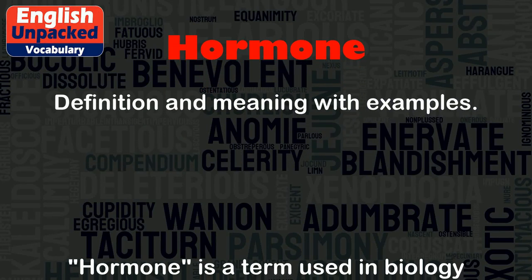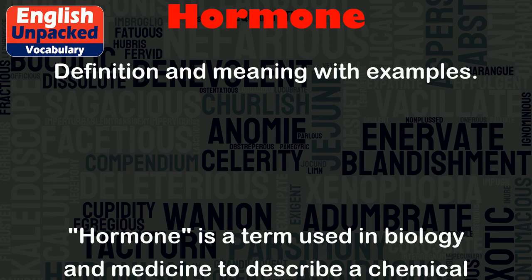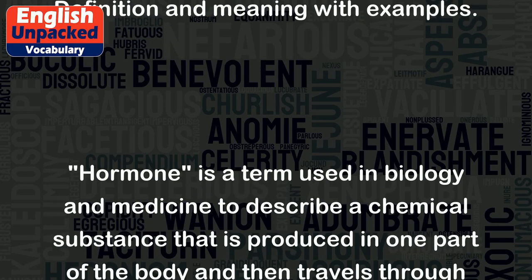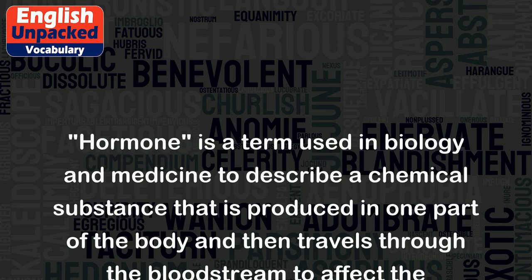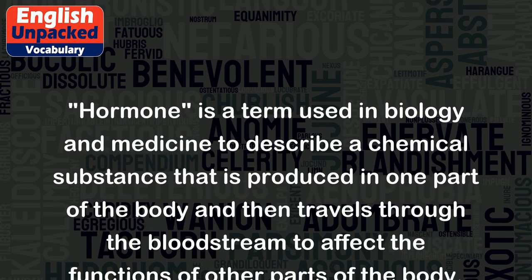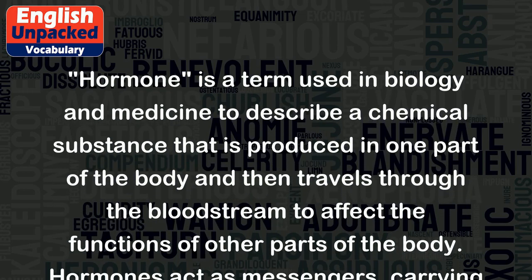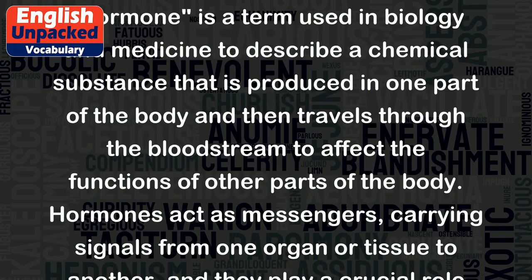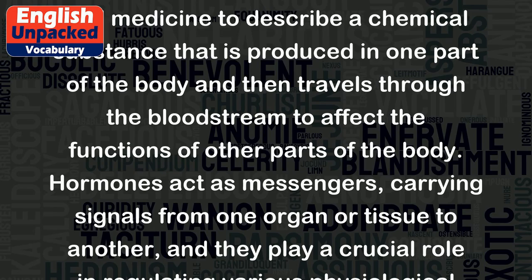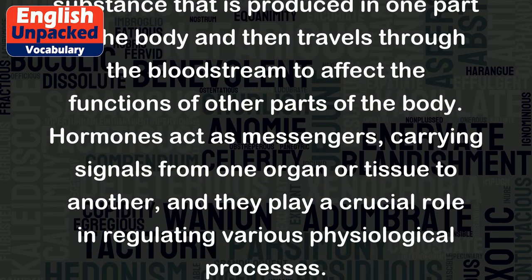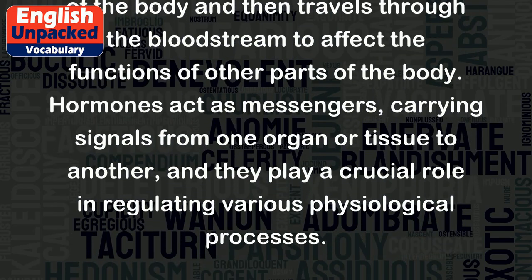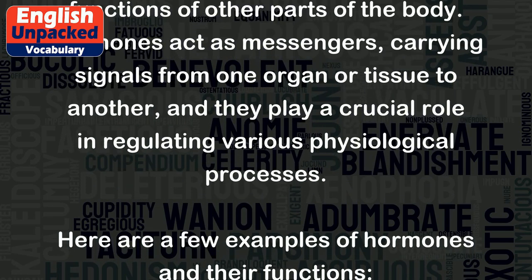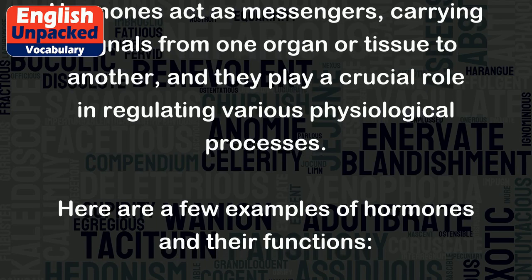Hormone. Hormone is a term used in biology and medicine to describe a chemical substance that is produced in one part of the body and then travels through the bloodstream to affect the functions of other parts of the body. Hormones act as messengers, carrying signals from one organ or tissue to another, and they play a crucial role in regulating various physiological processes.